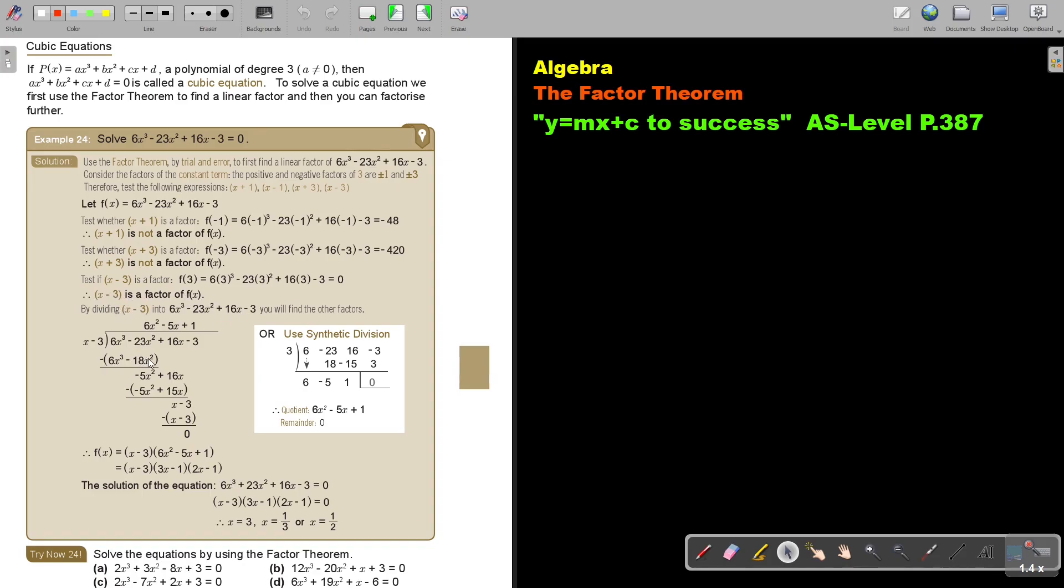Now you can either do long division or synthetic division, the short one. We'll do the short one, synthetic division. And then you get your quadratic expression, and then you factorize that. And then it's so easy. Because it's equal to zero, you solve it just like a quadratic equation. You put this bracket, it's either this bracket that's zero, or this bracket that's zero, or this bracket that's zero. And then there is your three answers.